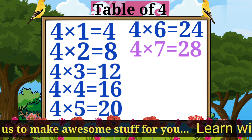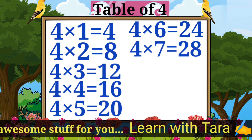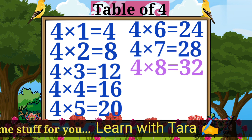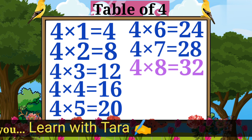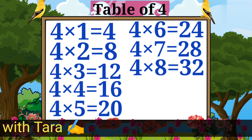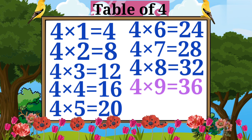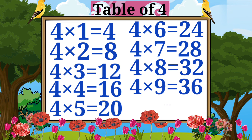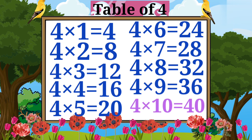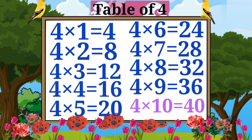Four sevens are twenty-eight. Four eights are thirty-two. Four nines are thirty-six. Four tens are forty.